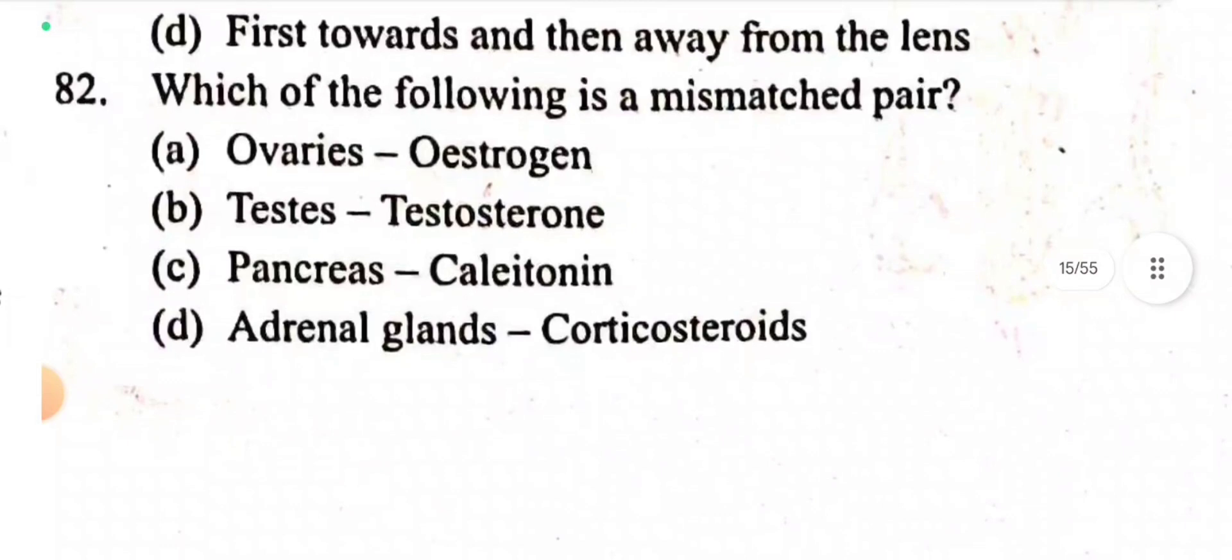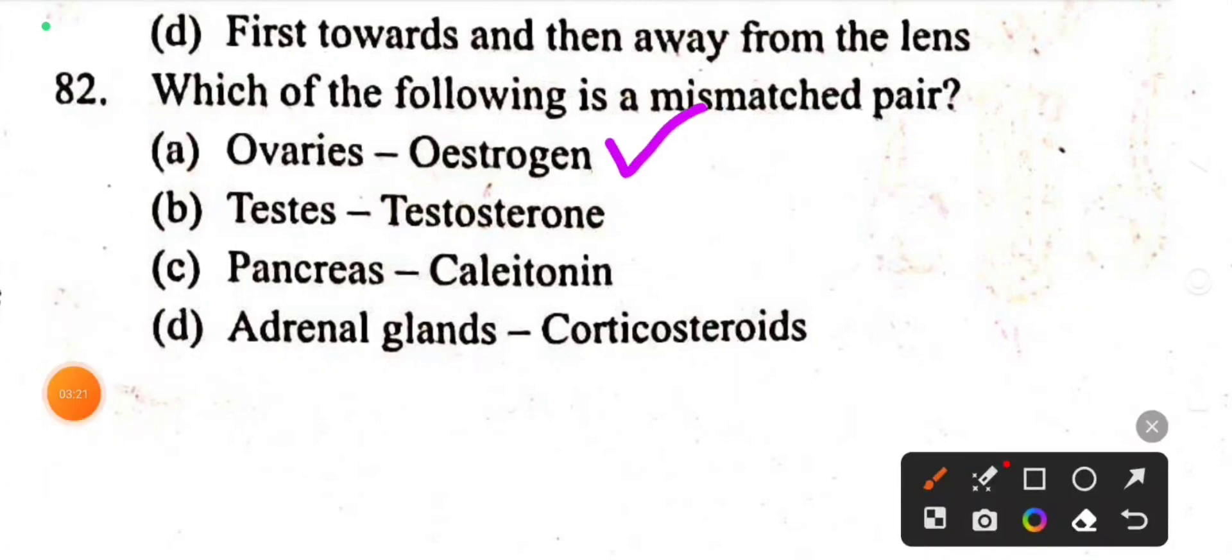Question 82: Which of the following is a mismatched pair? Ovaries-estrogen, correct. Testis-testosterone, correct.